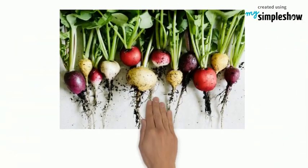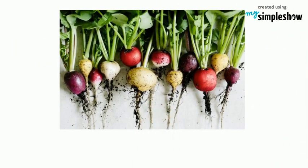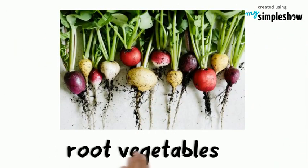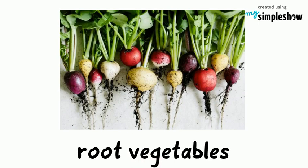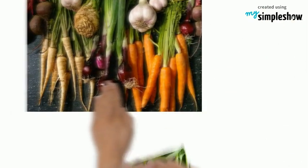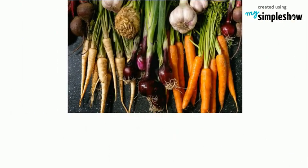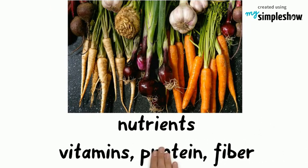The roots of many plants can be eaten. Many of these edible roots are known as root vegetables. They are full of nutrients such as vitamins, protein, and fiber. Root vegetables include carrots, beets, turnips, radishes, and sweet potatoes.